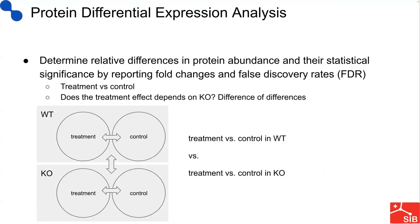We talked already about biological samples. I would like now to talk briefly about experiments which can be analyzed using these methods. One can determine relative differences in protein abundance and their statistical significance, and to do this we report fold changes and false discovery rates. Typically, a simple design of such an experiment is to compare a treatment to a control group of samples, but more complex designs are possible. One could also ask whether the treatment effect depends on the wild type or some knockout of the cells.